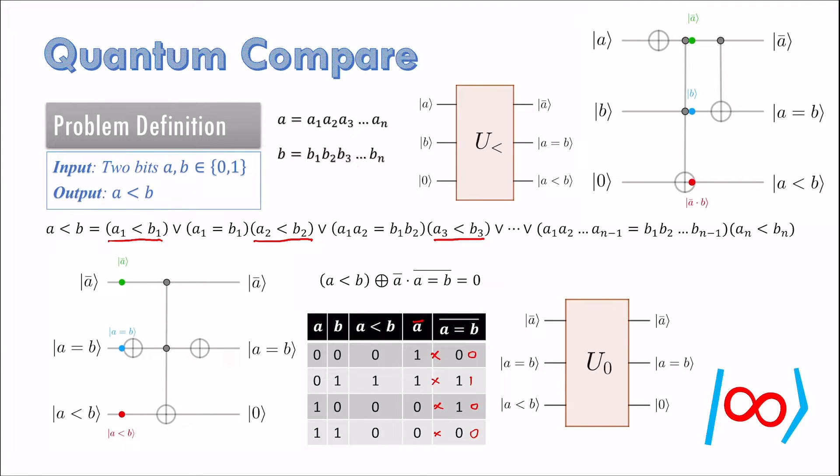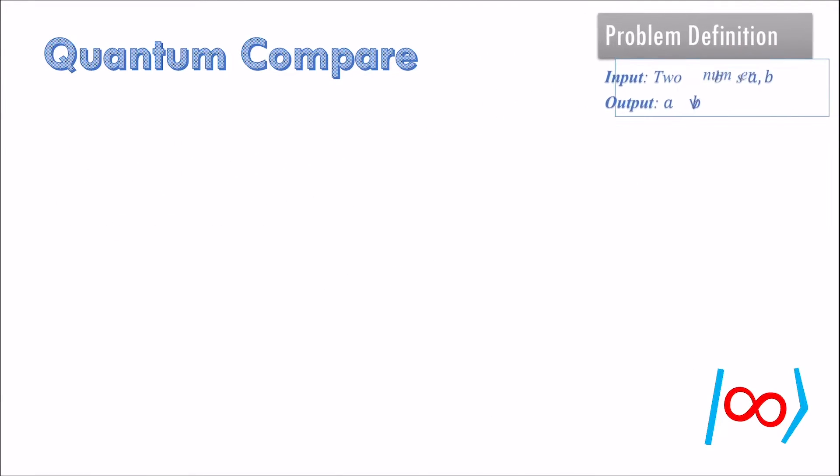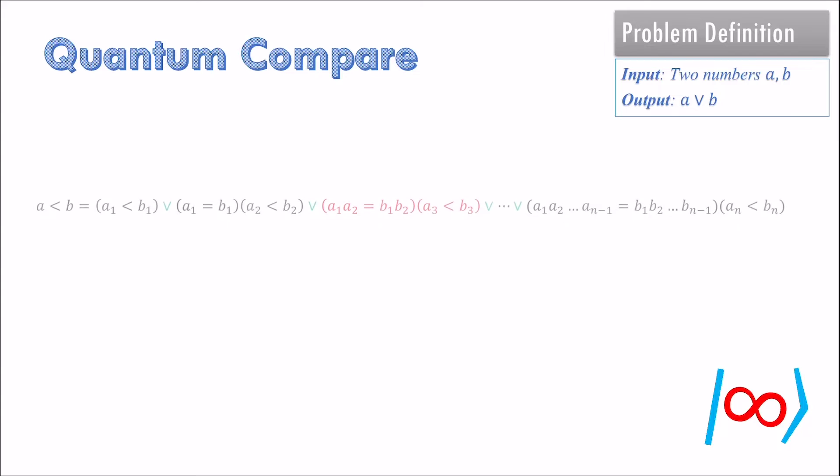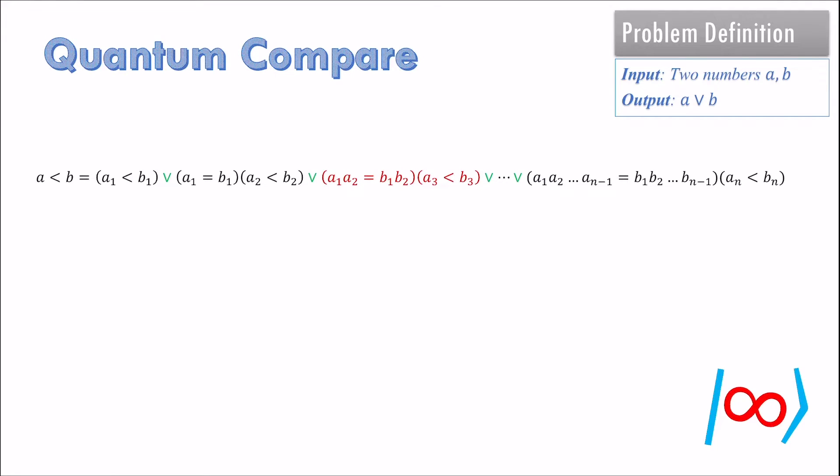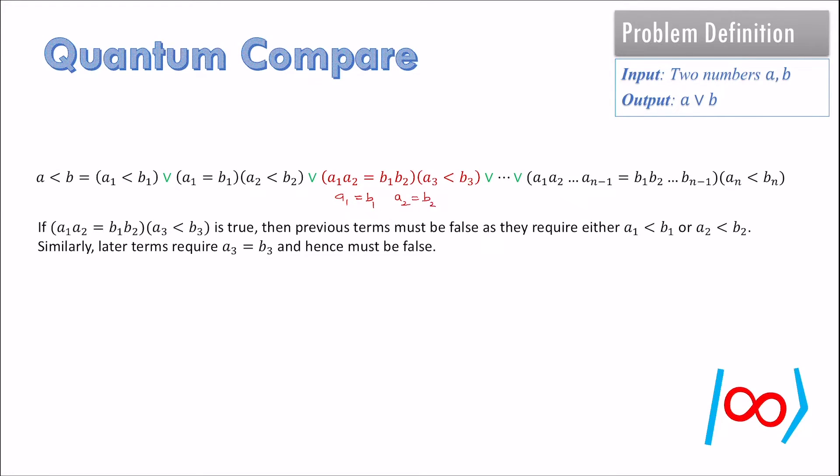There is one observation left. Consider the expression for less than. Say the third term is true. Then the previous terms must be false because they require that either the first or the second bit be unequal. Similarly, the later terms must be false as they require the third bit to be equal.